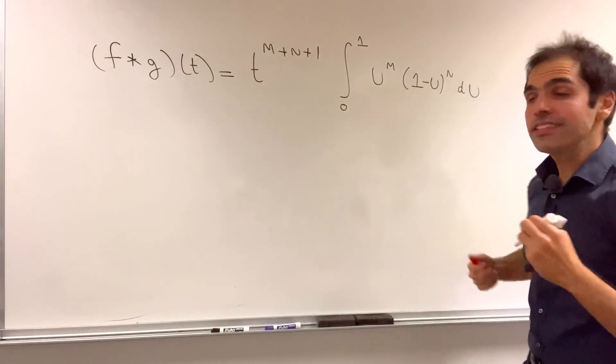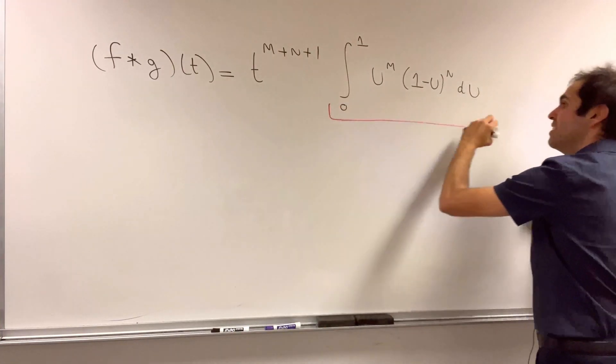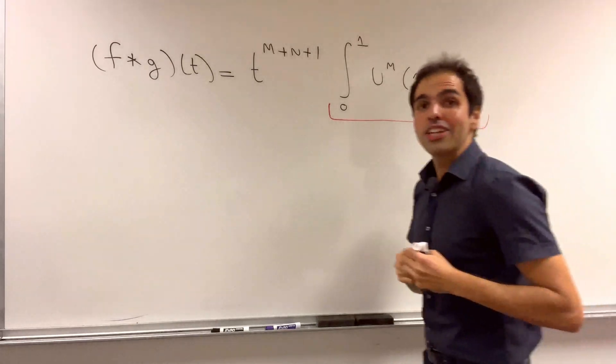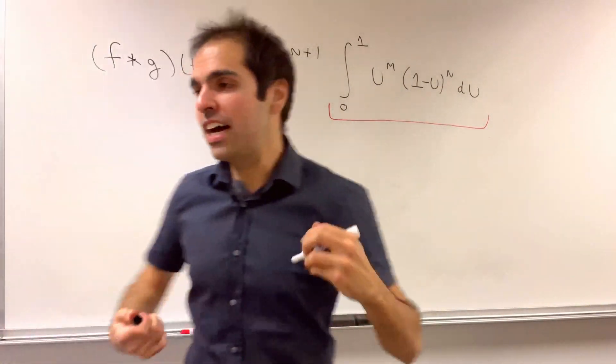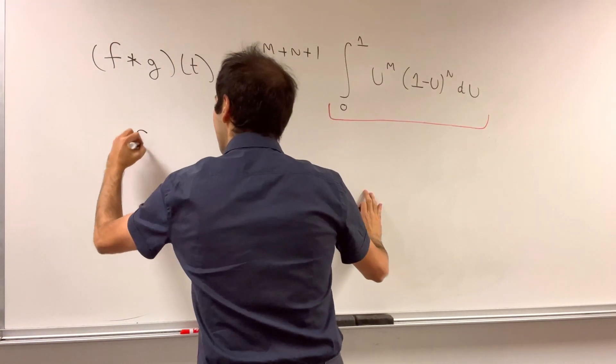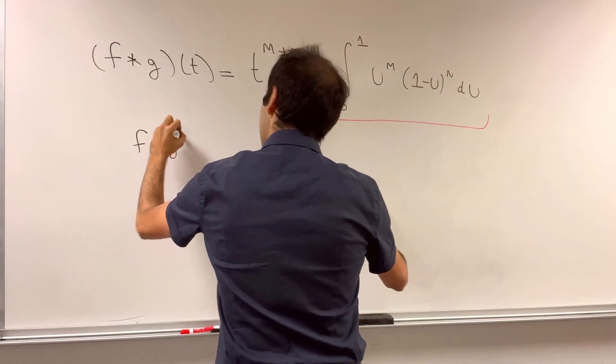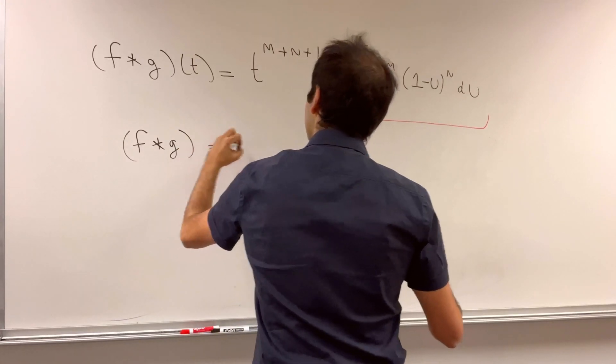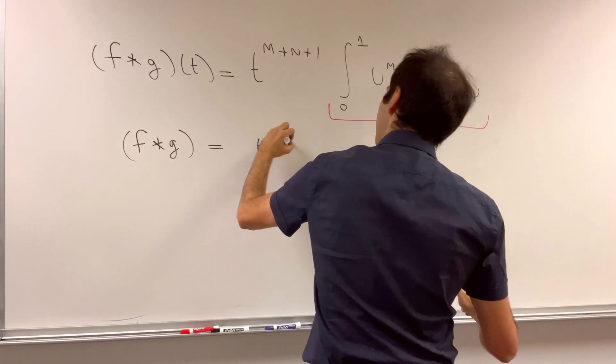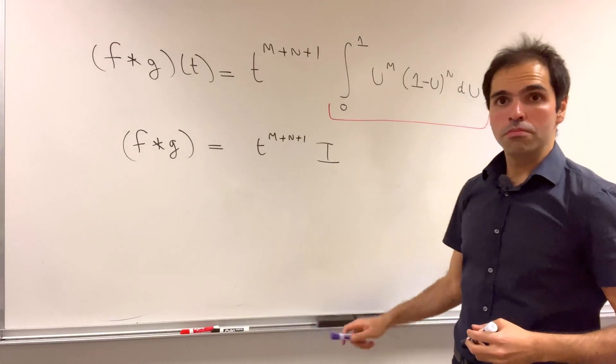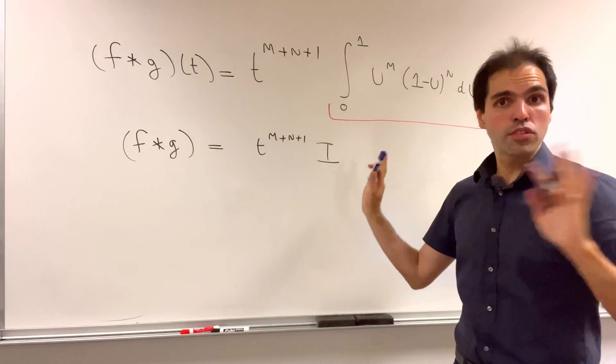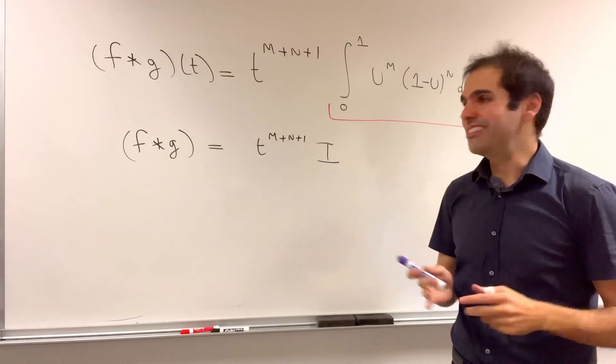But notice, this is precisely the integral that we wanted at the beginning. So what we get now is simply f convolved with g equals t to the m plus n plus 1 times our integral that we call I, and very important, I is just a constant.